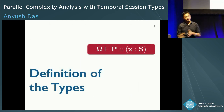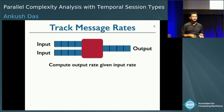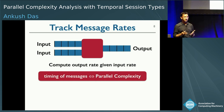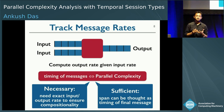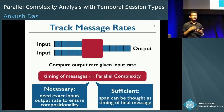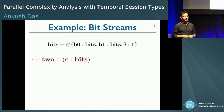Now let me move to the technical part and start by defining the types. Consider a simple stream processor that takes two streams of input and produces a stream as output. I'm interested in computing the rate of the output stream given the rates of the input streams. My claim is that to compute the parallel complexity of such a stream processor, you need to compute the timing of the messages — this is both necessary and sufficient. It's necessary to ensure compositionality, and sufficient because the parallel complexity is just the timing of the final message signaling the end of computation.